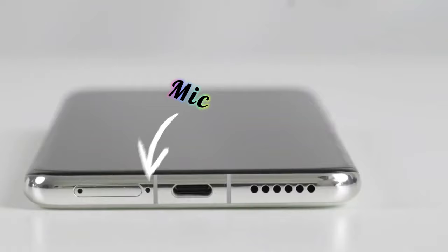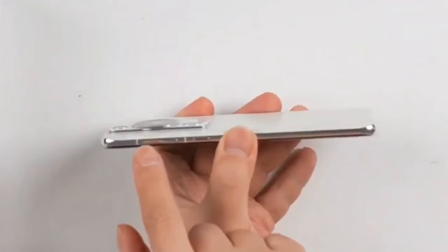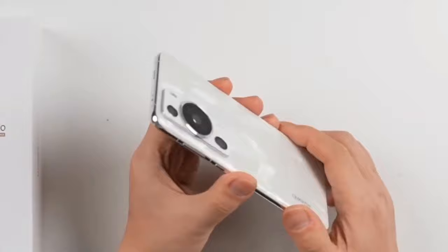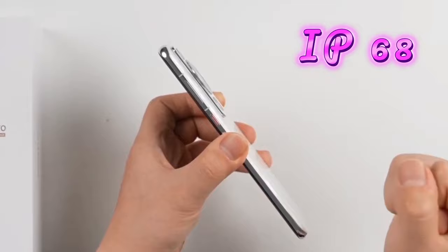So overall frame thickness is around about 8.3 millimeters and weight of smartphone is around 200 grams. Here weight is a little bit high but due to curved back your hand feel is going to be very good. With that you will find IP68 dust and water resistance as well.